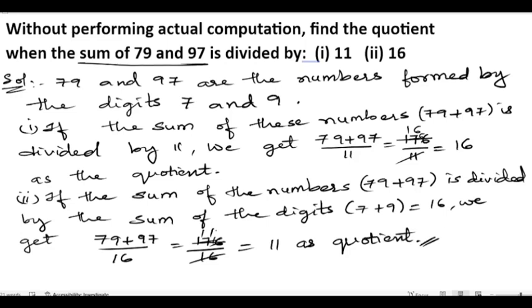So that means when we divide the sum with 11 we will get 16, and when we divide the sum with 16, that is the sum of these two digits, we will get 11.